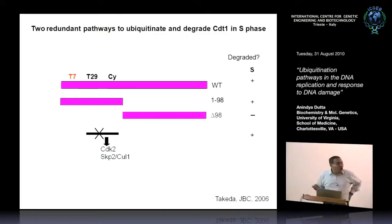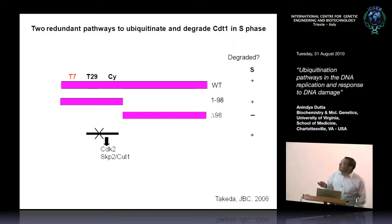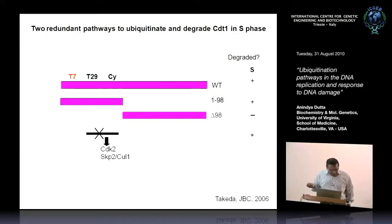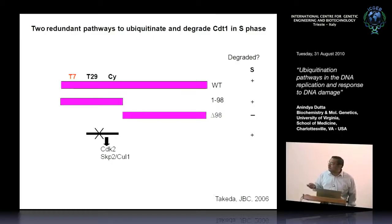When we started dissecting how CDT1 gets degraded, we found two redundant pathways. If you delete the first 98 amino acids of CDT1, it was no longer degraded in S phase. Attaching those first 98 amino acids to a foreign protein caused degradation in S phase. Many proteins that get degraded in S phase are substrates of the SKP2-CUL1 complex. Normally proteins like CDC6 get phosphorylated by cyclin-dependent kinases on a CDK substrate site, and that targets them to the SKP2-CUL1 complex. We thought that was probably the mechanism, but it turned out not to be true — when you mutated this motif (the black module), the protein was still degraded in S phase.